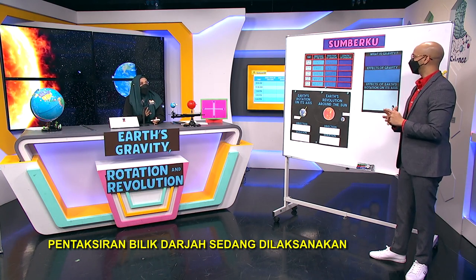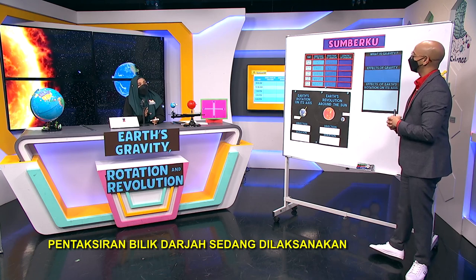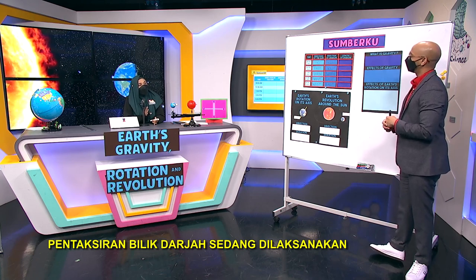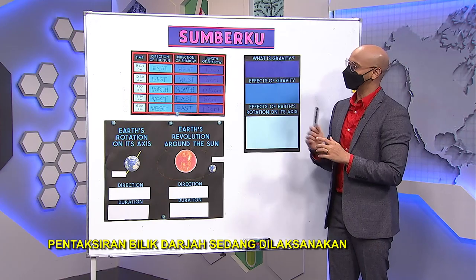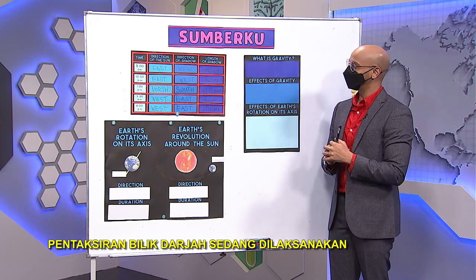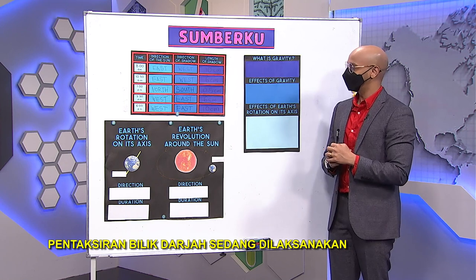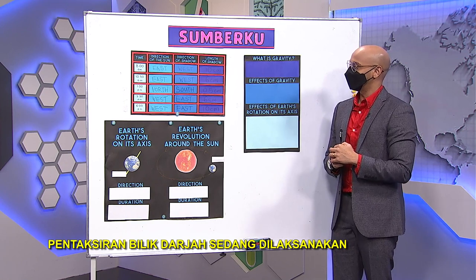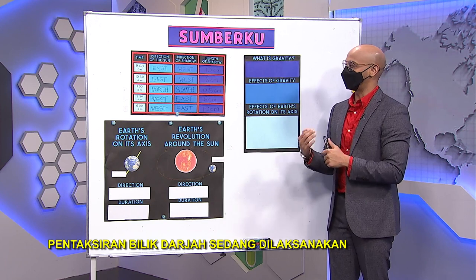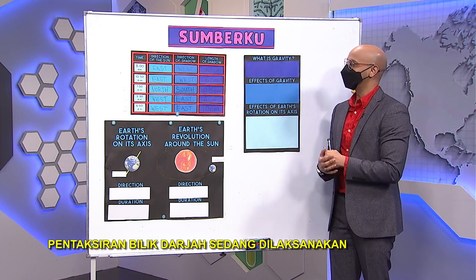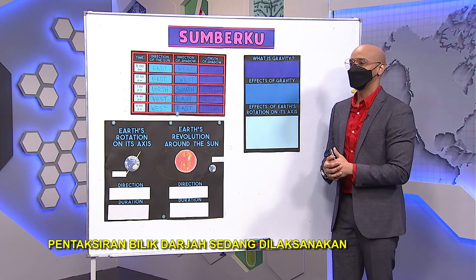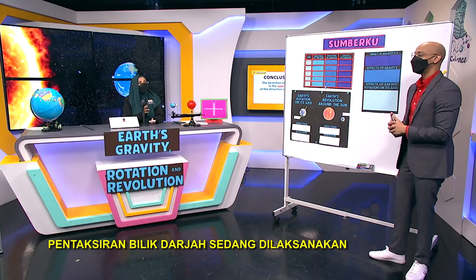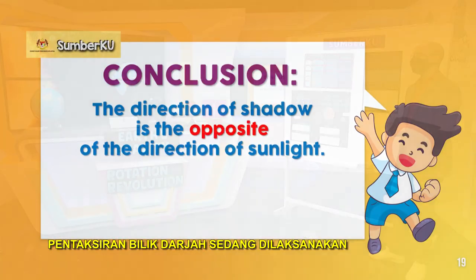It appears that the sun rises from the east and sets to the west. The direction of the shadow is the opposite of the direction of the sun.